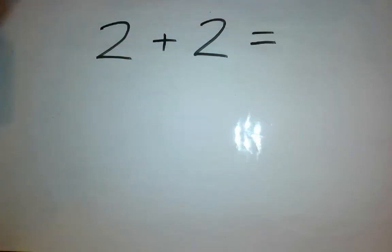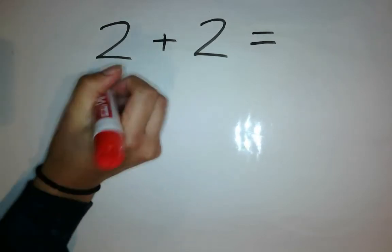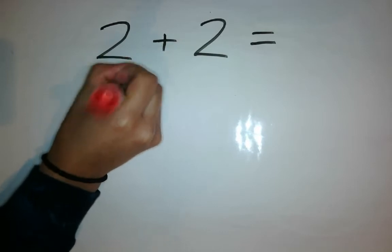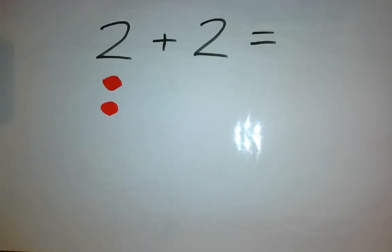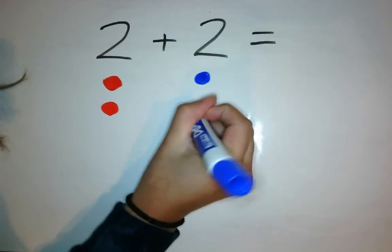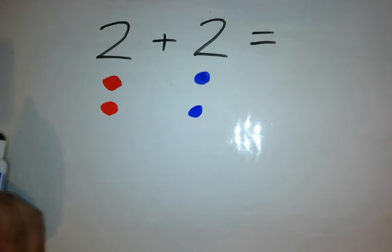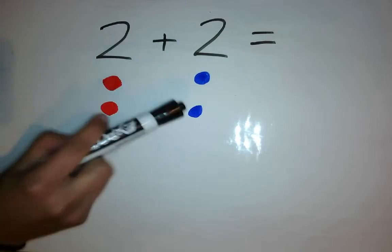Alright, so I have the number 2 here. So guess what I'm going to do? I'm going to draw two dots. Alright, I'm adding, so we're putting together. So we're going to add another two dots. Alright, now I have my two dots and my two dots, so I need to put them together. Alright, so I'm just simply going to count. 1, 2, 3, 4.